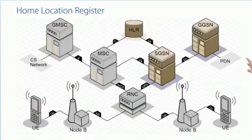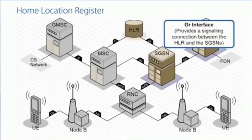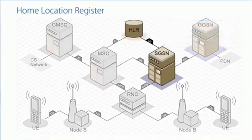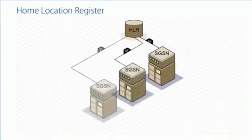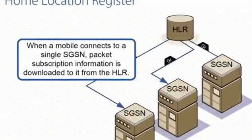We also have connectivity towards the HLR. Just as we had the C interface on the circuit switch side, we've got the GR interface — G for GPRS, R for register, since the HLR is a register. This GR interface is used for downloading your profile information. As you connect onto one SGSN, your profile information is downloaded to that SGSN. Different users on different SGSNs will have their profile downloaded from the HLR to the appropriate SGSN.